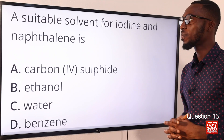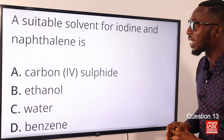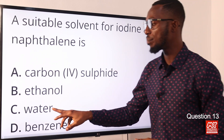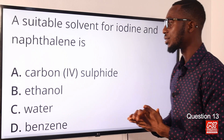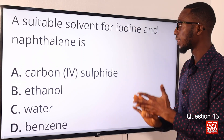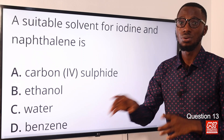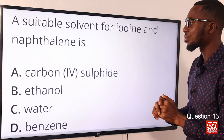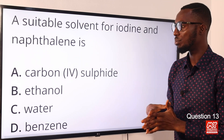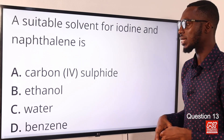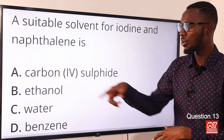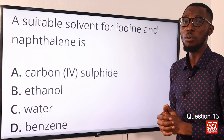Question 13: A suitable solvent for both iodine and naphthalene is what? Iodine is insoluble in water but soluble in potassium iodide, ether, and ethanol — as in tincture of iodine. Naphthalene is also soluble in ethanol. The common solvent for both of them is ethanol, which is option B. Option B is the correct answer.